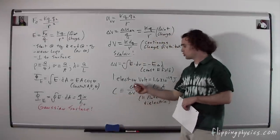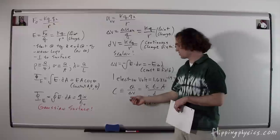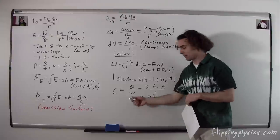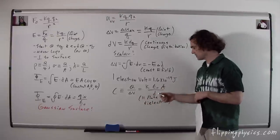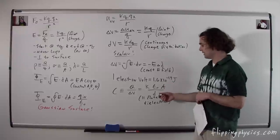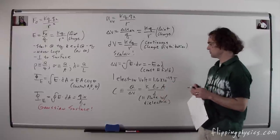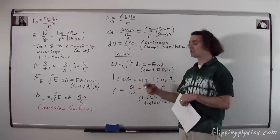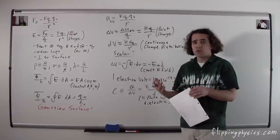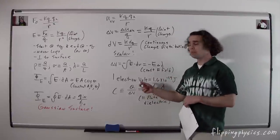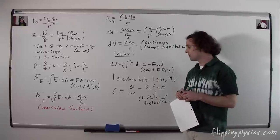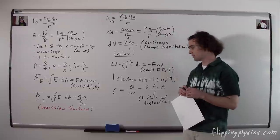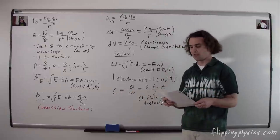Capacitance is defined as the charge that can be stored on a capacitor per electric potential difference for that capacitor. For a parallel plate capacitor, we have C = κε₀A/d, where κ is the dielectric constant, A is the area of the two plates, and d is the distance between the two plates. Capacitance is always positive, and the charge refers to the charge on one of the two plates.